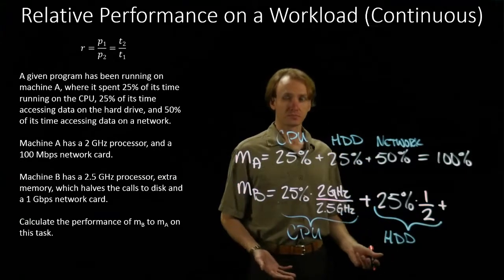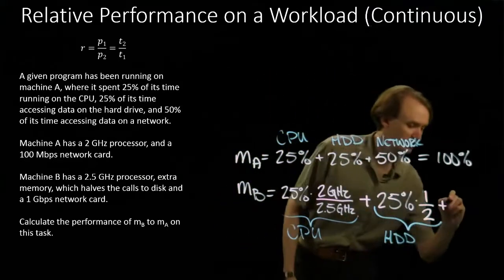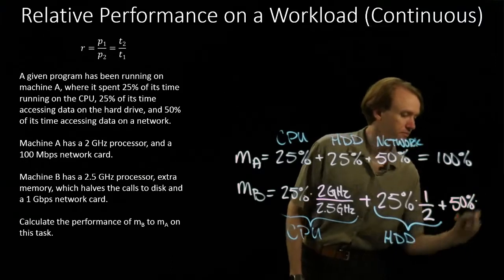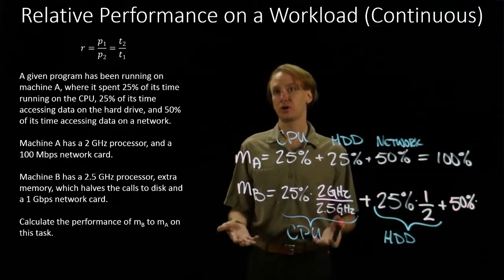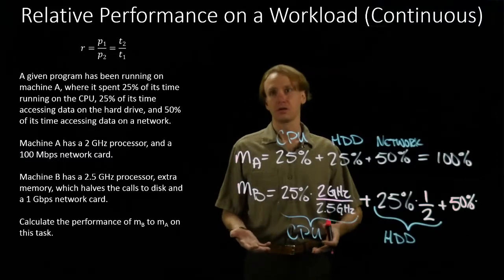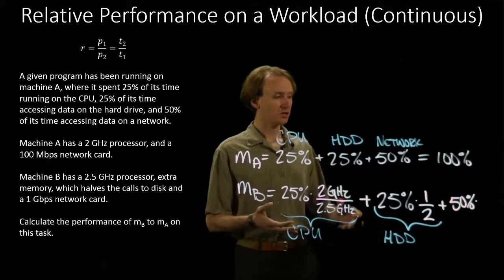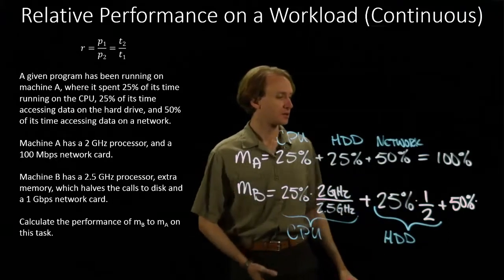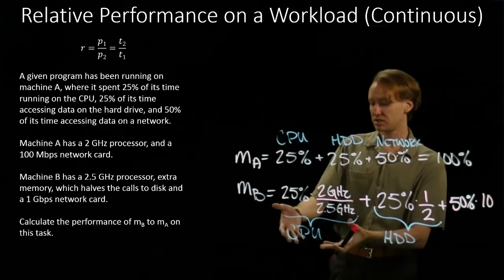Last part here is the network. So the network is taking 50% of the original computation. And machine A has a 100 megabit network card. Machine B has a one gigabit per second network card. So machine B is about ten times faster on the network portion.